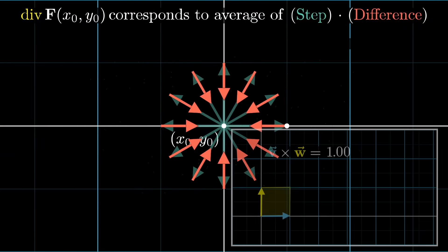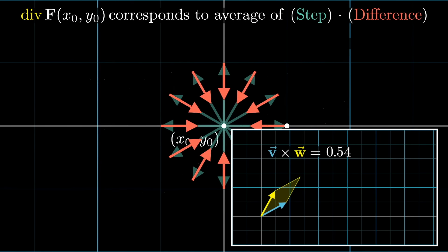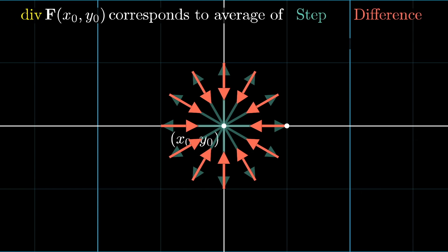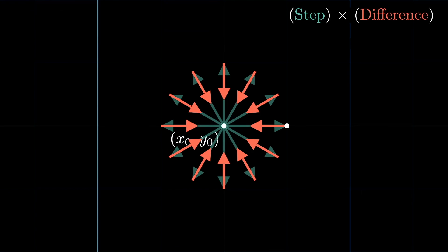Similarly, remember that the cross product is a sort of measure for how perpendicular two vectors are. So the cross product of your step vector with the difference vector that it causes tends to be positive in regions where the curl is positive, and vice versa.